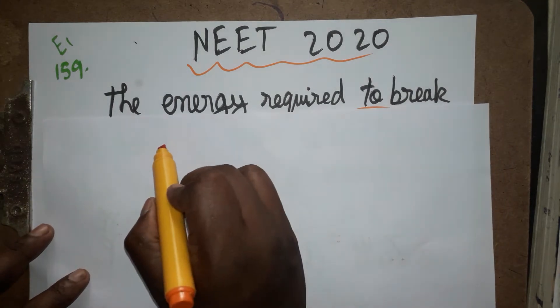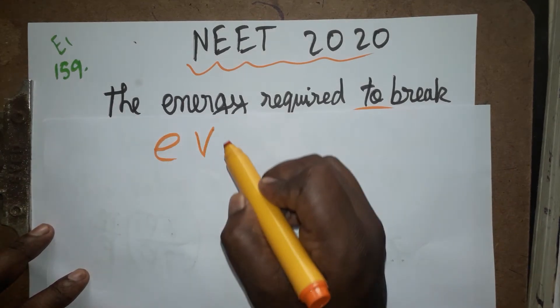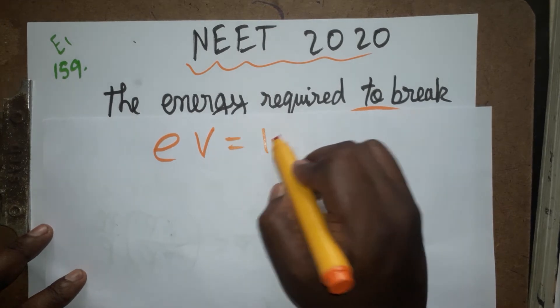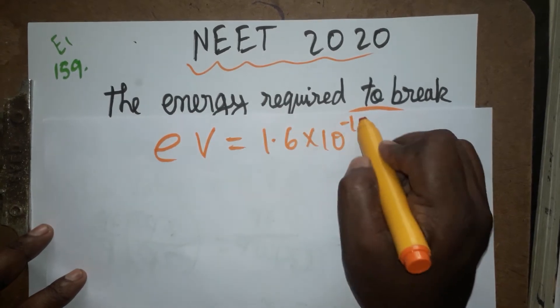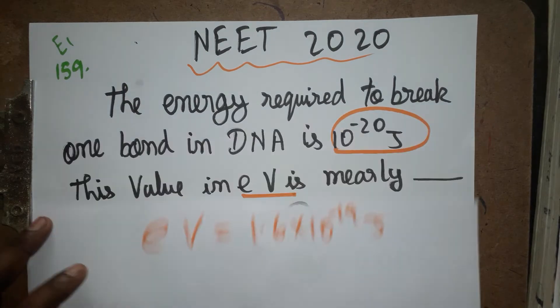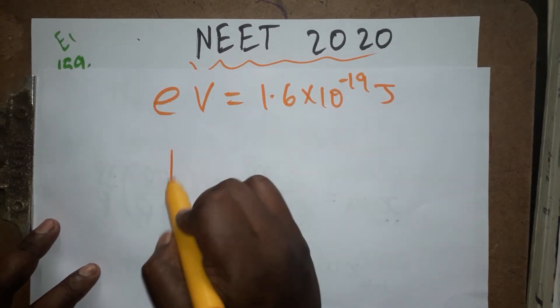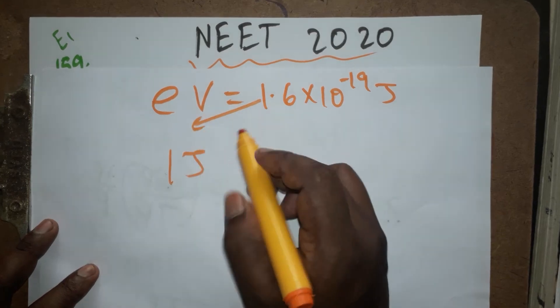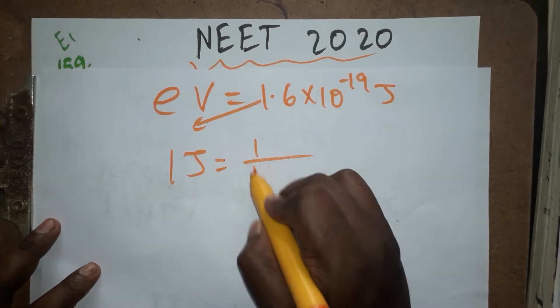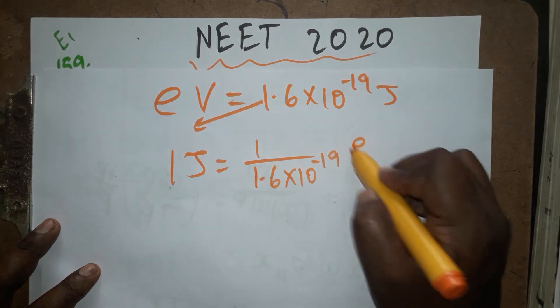how to convert from joules to eV. Electron volt is an energy unit which equals 1.6 × 10^-19 joules. Now they asked for this many joules in eV. One joule is how many eV? You can bring this as a denominator: 1 divided by 1.6 × 10^-19 eV.